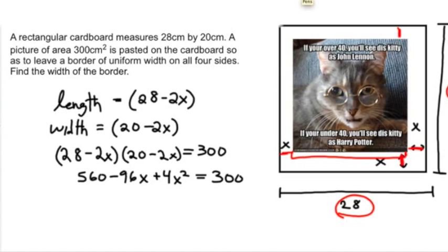That means I get 560 minus 96x plus 4x² equals 300. Again, if you're lost on that one, go ahead and expand everything out bit by bit. And you'll see where those values come from. Now I'm here at 560 minus 96x plus 4x² equals 300. I am going to combine my like terms here. I'm going to set it up so that it is equal to 0 by subtracting 300 from both sides.